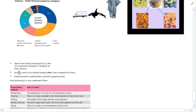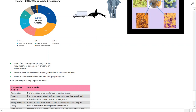Apart from storing food properly, it is also very important to prepare it on clean surfaces. Microorganisms are everywhere - they're part of us and we've co-evolved with them - but good hygiene standards and cleaning standards within restaurants are very important to make sure food poisoning doesn't happen. Surfaces need to be cleaned properly after food is prepared on them. If you leave food out on a surface, microorganisms from the air will land on it, start to multiply, eat the food, and produce waste.